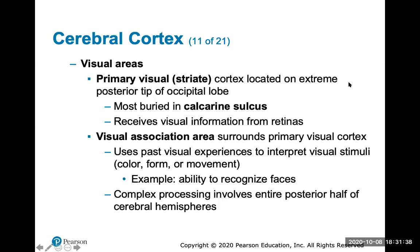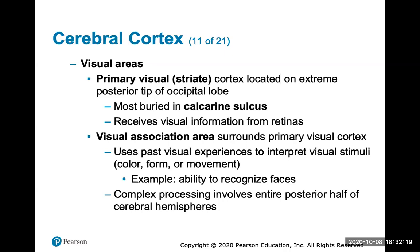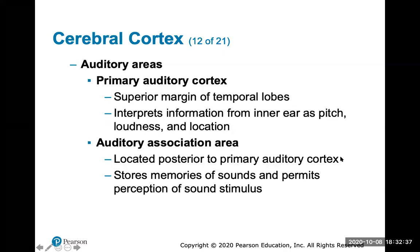We're going to talk about some of the association areas within the brain. I want you to know what each lobe of the brain is responsible for and where these different association areas are. The primary visual cortex is located on the extreme posterior tip of the occipital lobe, and the visual association center surrounds it. It uses past visual experiences to interpret visual stimuli like color, form, and movement — this is where the ability to recognize faces comes into play.